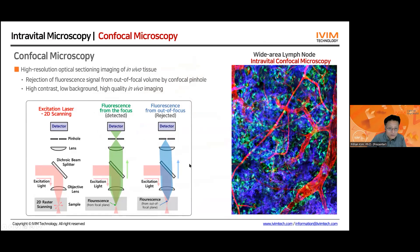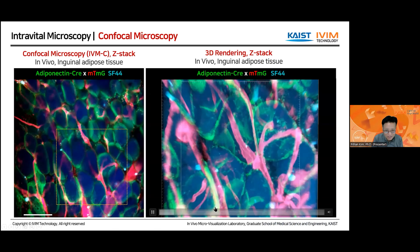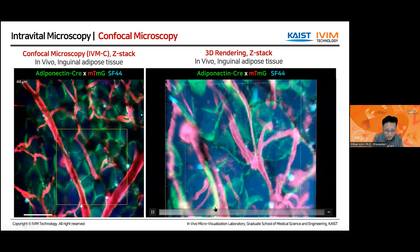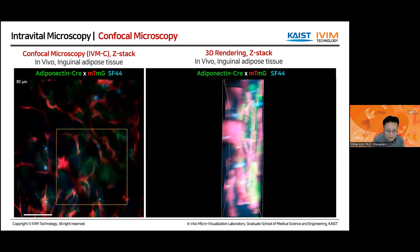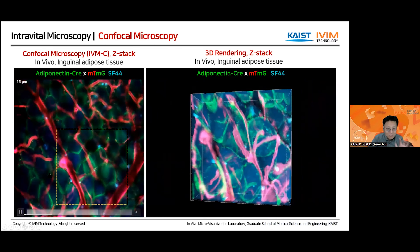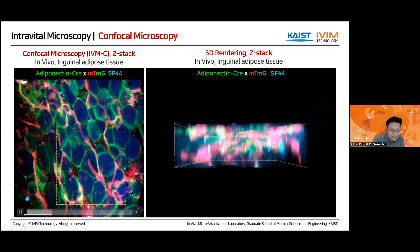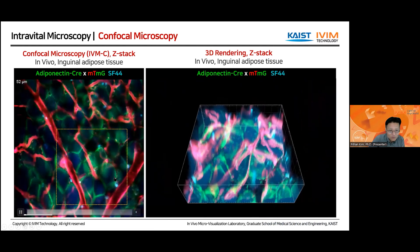As many of you know, in the confocal microscope we use a pinhole to reject the out-of-focus signal from outside the focal volume. Thereby we can take optical section imaging from live tissue in very high resolution. This is one good example: what you are looking at is inguinal adipose tissue in an anesthetized adiponectin-Cre; MTMG mouse.